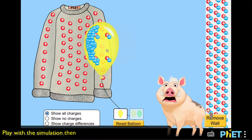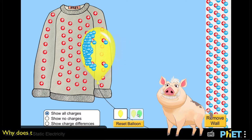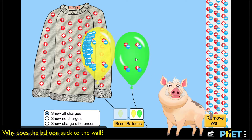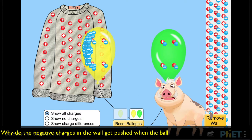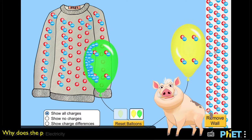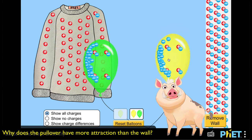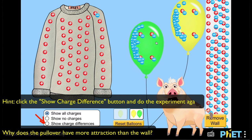Play with the simulation, then think about the following questions: Why does the balloon stick to the wall? Why do the negative charges in the wall get pushed when the balloon is brought close to the wall? Why does the pullover have more attraction than the wall? Hint: click the 'show charge difference' button and do the experiment again.